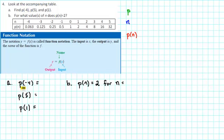So when we are asked to find p(-4), what we are asked to do is find the output when the input is negative 4. So we are going to look for negative 4 in the input row. The input row is the first row, we will find negative 4, and we will be looking for the corresponding output.